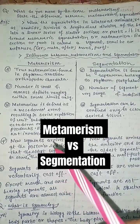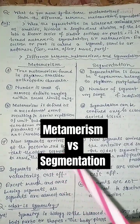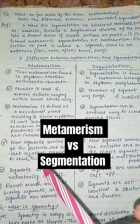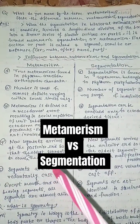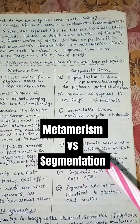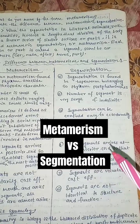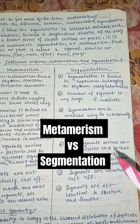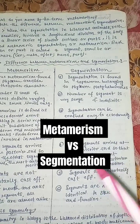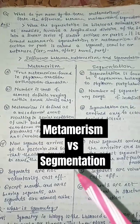New segments arise at the posterior end in metamerism, so that the oldest segment comes in the most anterior position. But in segmentation, new segments arise at the anterior end, so that the oldest segment comes in the most posterior position.